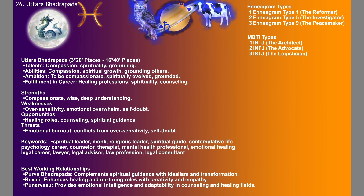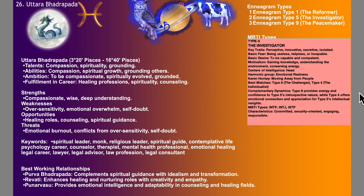The next Enneagram type compatible with this nakshatra is type 5, the Investigator. This Enneagram has qualities of perception — very perceptive people — innovative, secretive and isolated. The basic desire is to be capable and competent; basic motivation is gaining knowledge and understanding the environment, conserving energy. Centres of intelligence is the head, moving away from people. They could make careers in the legal industry — being a lawyer, advisor, legal consultant — more so on the mediation front, because Uttarabhadrapada is more emotional and they can be good mediators also.